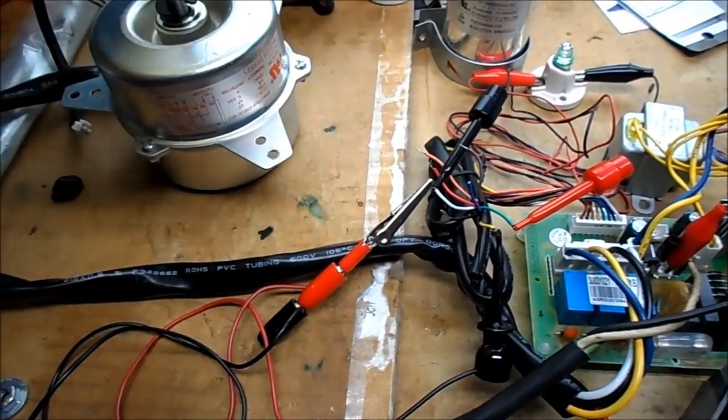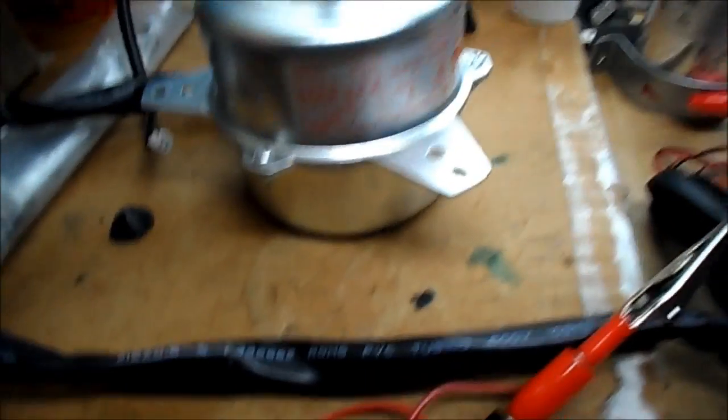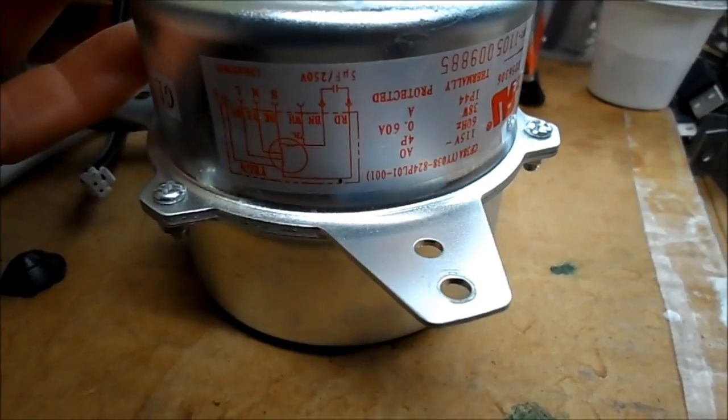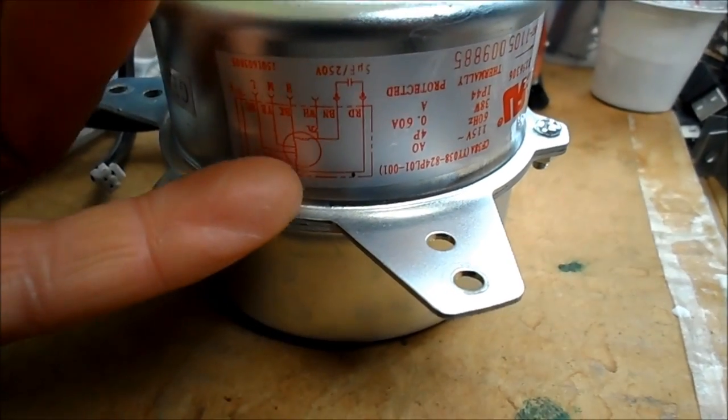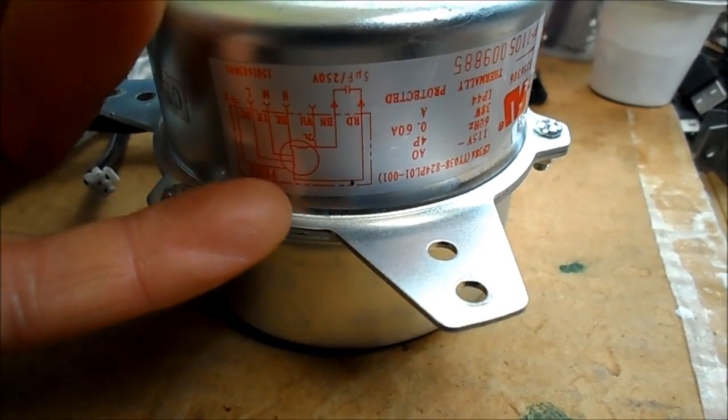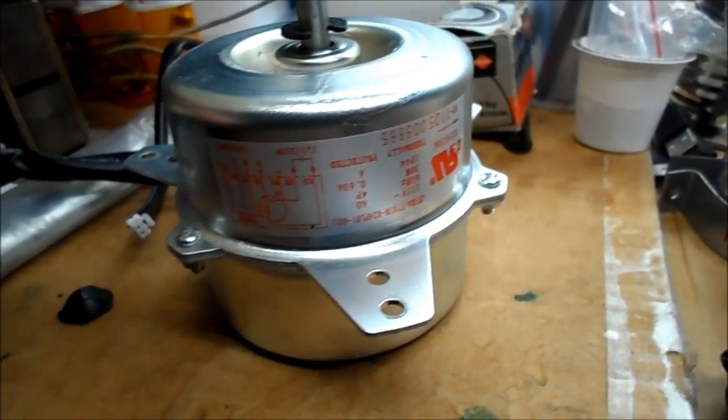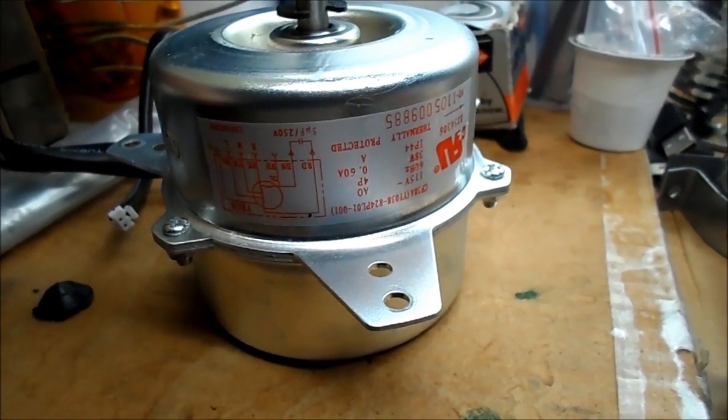There's a three-speed motor. You can see it's labeled GE. It has a starting winding and three taps, two taps for the speed: low, medium, and high. Thermally protected and it's labeled quite nice.